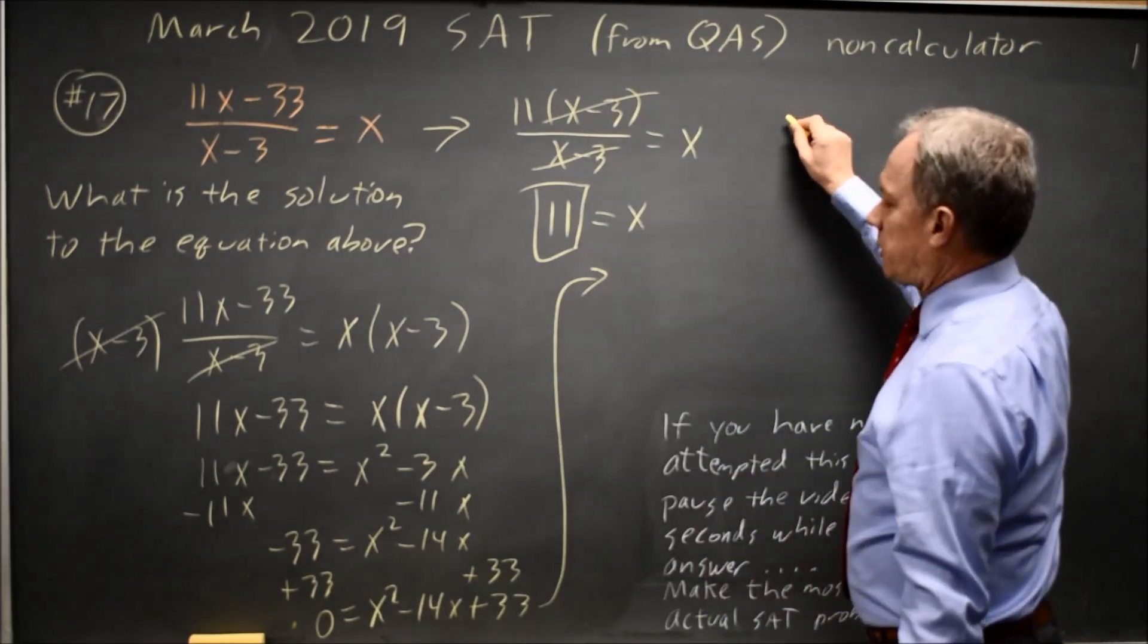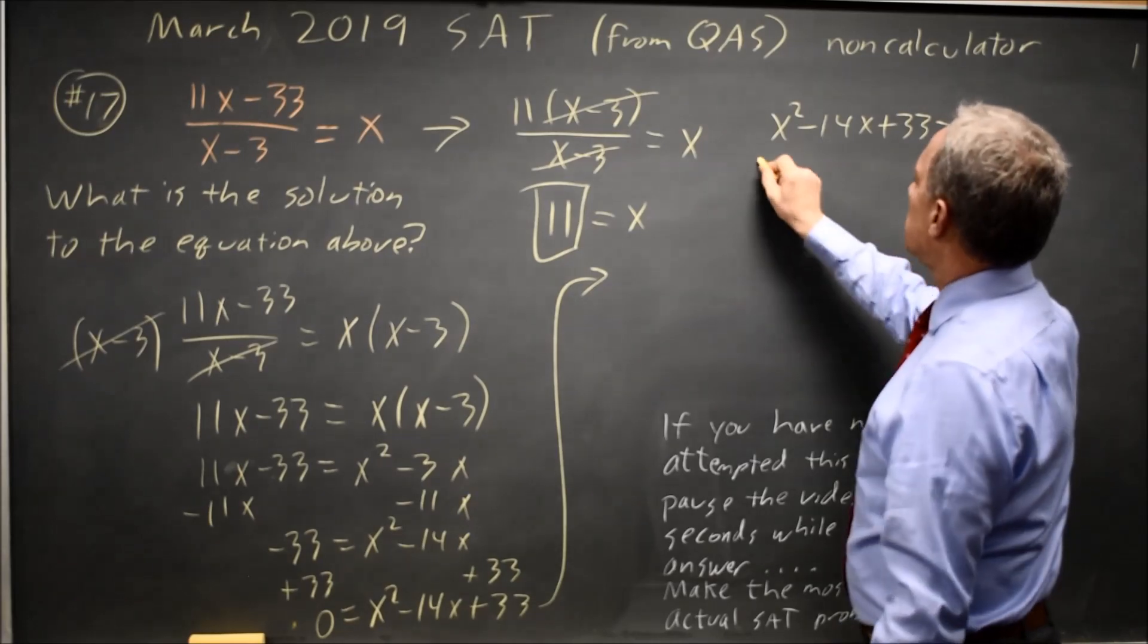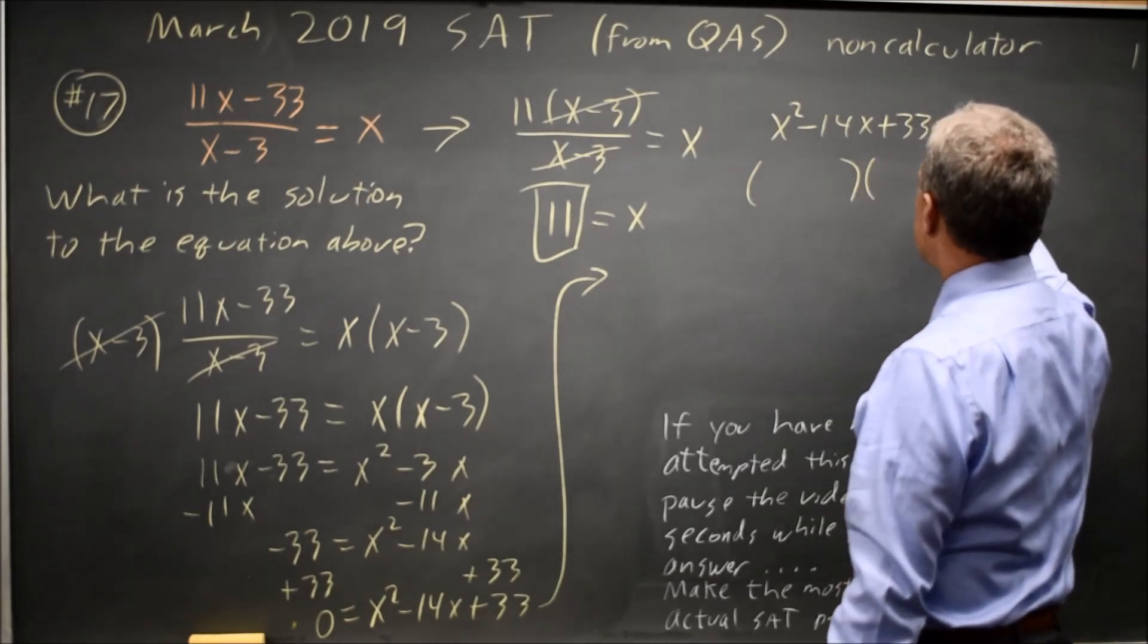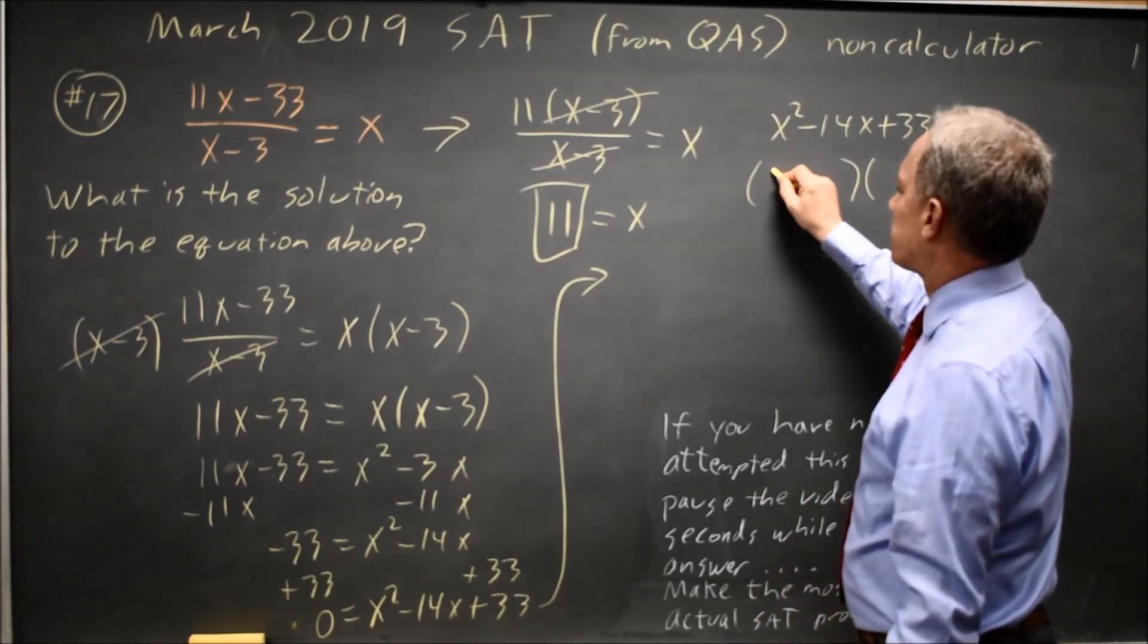Let's rewrite that up here. x squared minus 14x plus 33 equals 0, and to solve a quadratic, I'm either going to factor or use the quadratic formula. In this case, I'll definitely try factoring first.